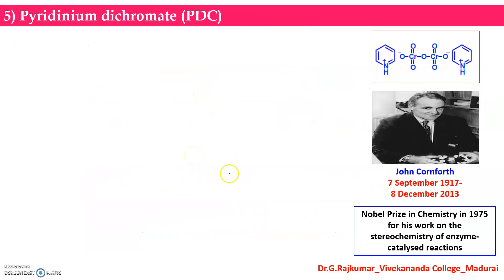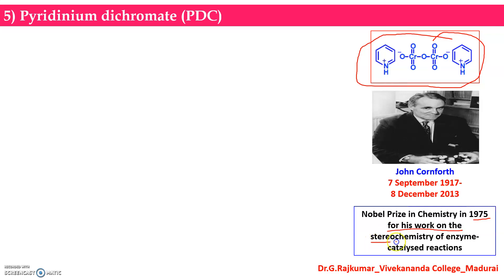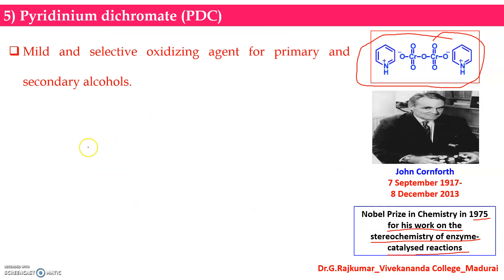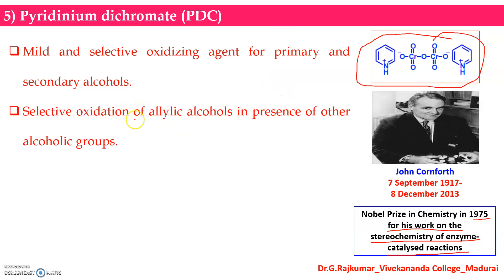The next reagent is PDC — pyridinium dichromate. John Cornforth utilized this reagent for the oxidation of alcohols. He received the Nobel Prize in 1975 for his work on the stereochemistry of enzyme-catalyzed reactions.